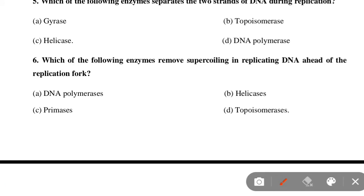Next MCQ: Which of the following enzymes removes supercoiling in replicating DNA ahead of the replication fork? Option A: DNA polymerase, Option B: Helicase, Option C: Primase, Option D: Topoisomerase. The correct answer is Option D — topoisomerase.